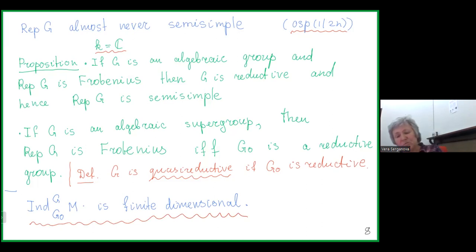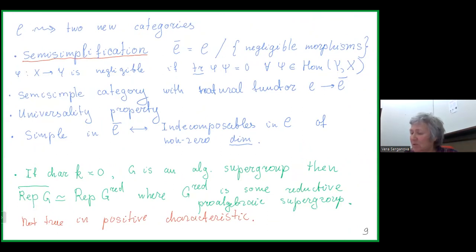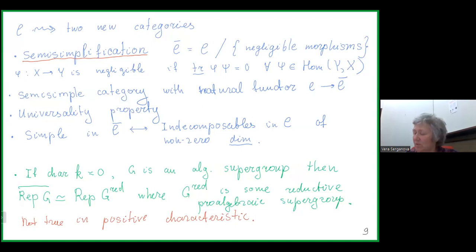The main reason behind this second statement is that if I take the induction functor and induce from the even part a finite-dimensional representation, I end up again in a finite-dimensional setting. So if I start with something projective and induce, I still have something finite-dimensional and projective. Now let me switch gears and talk about two constructions related to tensor categories: semi-simplification and stable categories.